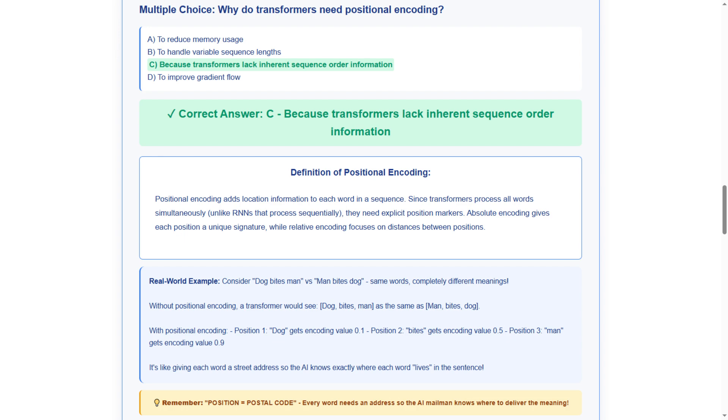The layman explanation demonstrates why position matters using dog bites man versus man bites dog. Same words, completely different meanings. Without positional encoding, transformers would see these as identical. This shows critical word order importance.